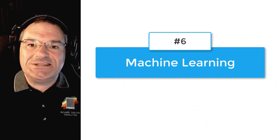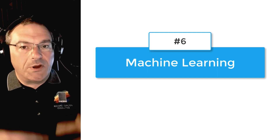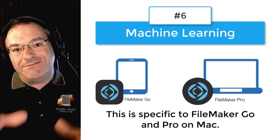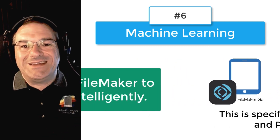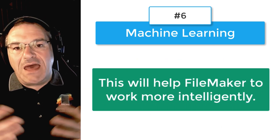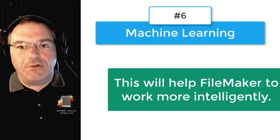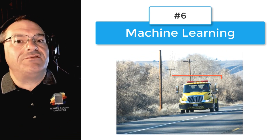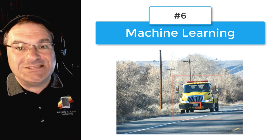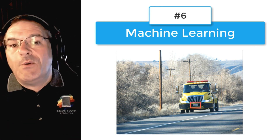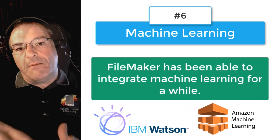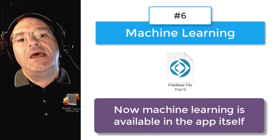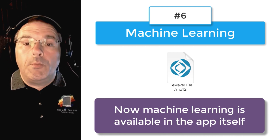Number six on our list is that Claris is putting hooks or commands that allow us to tap into machine learning — specific to FileMaker Go and FileMaker Pro on the Macintosh. This allows FileMaker to take advantage of machine learning processes and act in a more intelligent fashion. For example, if you had a bunch of images, could FileMaker identify specific items in the image, identify vehicles, or even read license plates? This brings machine learning down into the FileMaker custom application itself, opening a lot of interesting doors. Previously you could integrate FileMaker with IBM Watson, Amazon, or other machine learning services, but now it's built in.